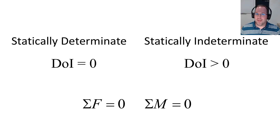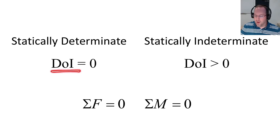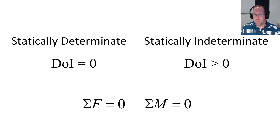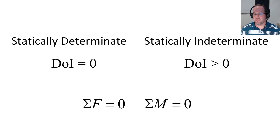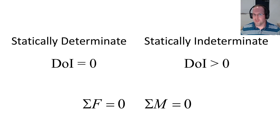To distinguish between a determinate and indeterminate system, we're going to define something called the degree of indeterminacy, which I'll always label as DOI. The degree of indeterminacy tells us how many unknowns we have in excess of the usable equations of equilibrium. If DOI equals zero, you have a statically determinate system. If DOI is greater than zero, you have a statically indeterminate system. If DOI is less than zero, your structure is guaranteed to be unstable, so we'll always deal with DOI of zero or more.